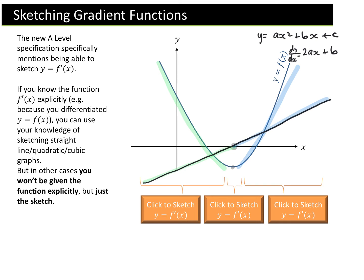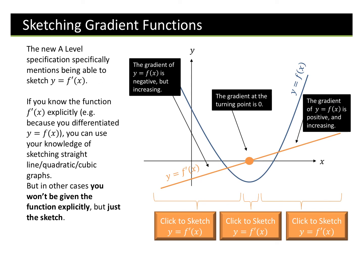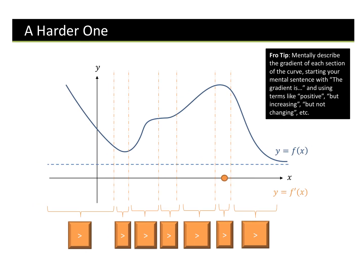Here is a harder example from Dr Frost. Before sketching the gradient function, I want you to give it a go — it's been split into seven parts. First, identify where gradients are zero: maximums, minimums, or points of inflection. A change from positive to negative gradient means gradient equals zero at some point. Looking at the graph: there's a minimum, a point of inflection, and a maximum — three places where the gradient equals zero.